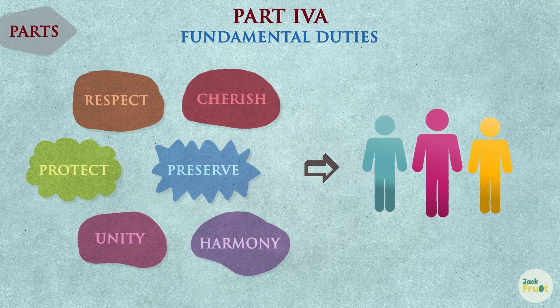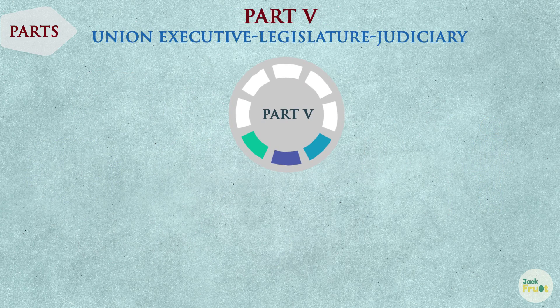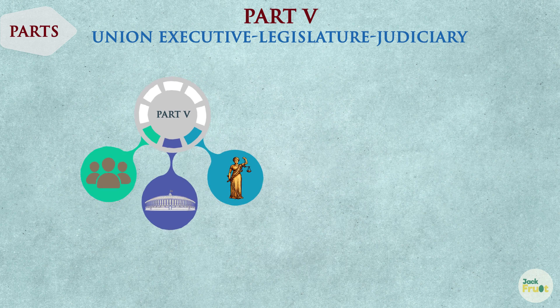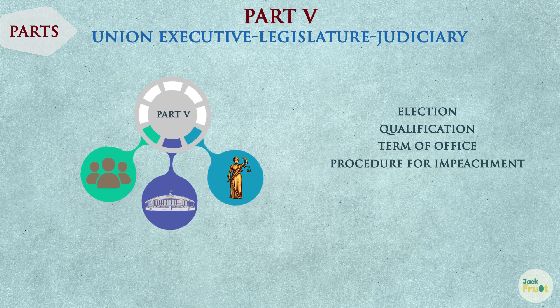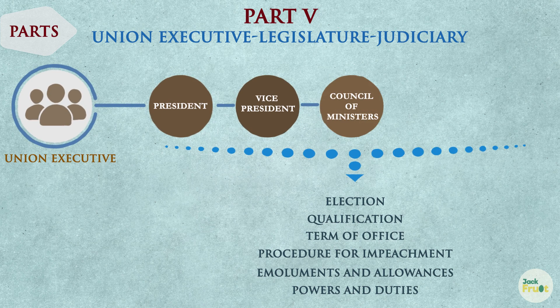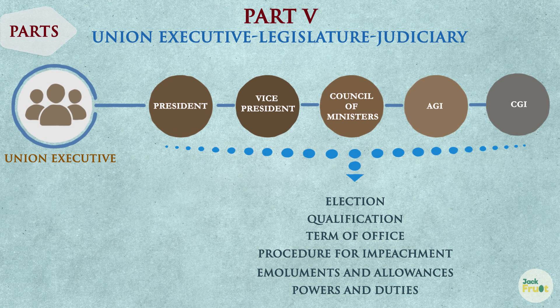Part 4A talks about the fundamental duties of the citizens. Part 5 of the Constitution deals with the union executive, union legislature, and union judiciary. It describes the election, qualification, term of office, procedure for impeachment, emoluments and allowances, powers and duties of the union executives such as the President of India, Vice President, Council of Ministers, Attorney General of India, Comptroller General of India, etc.